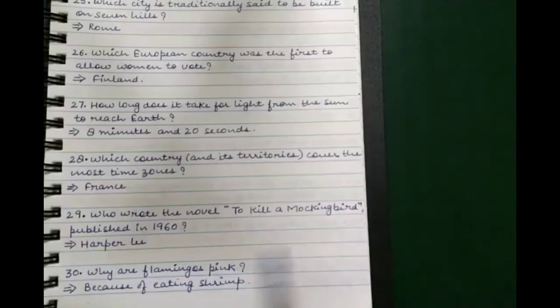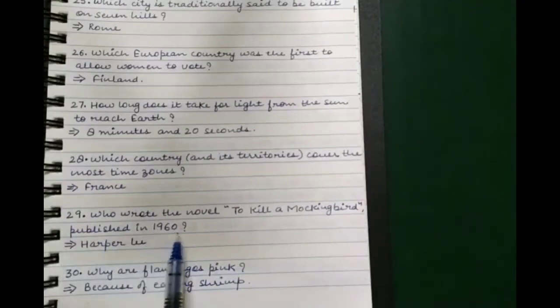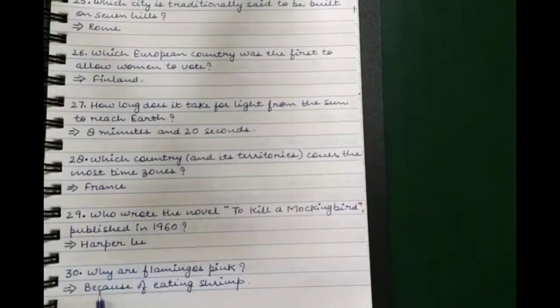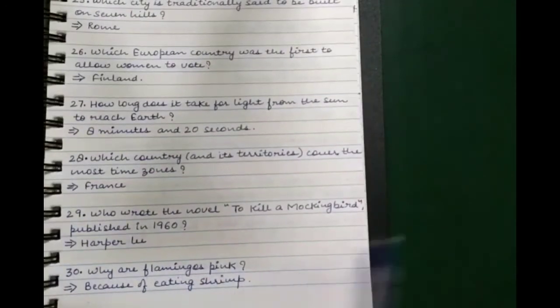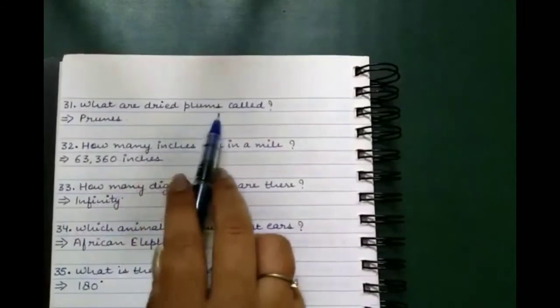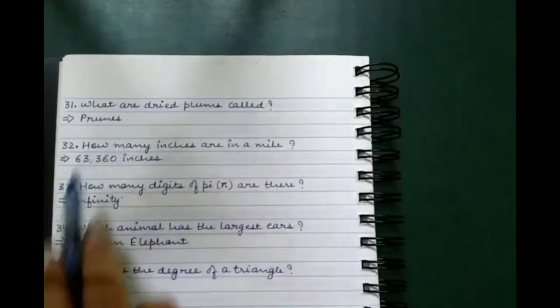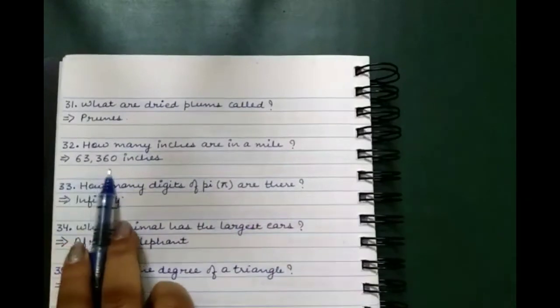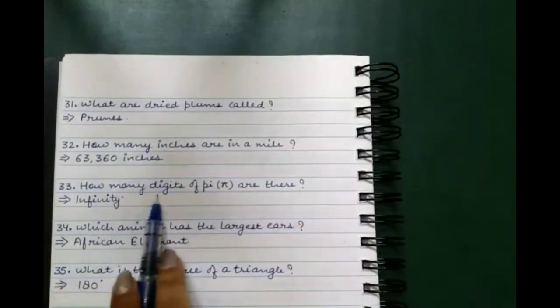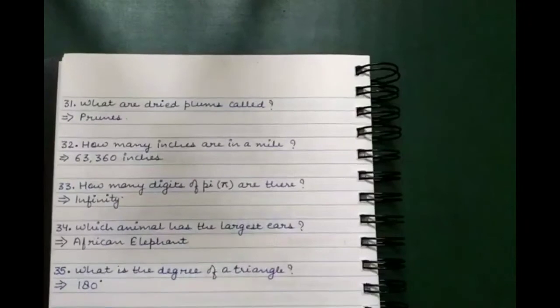Which country and its territories cover the most time zones? France. Who wrote the novel To Kill a Mockingbird published in 1960? Harper Lee. Why are flamingos pink? Because of eating shrimp. What are dried plums called? Prunes.